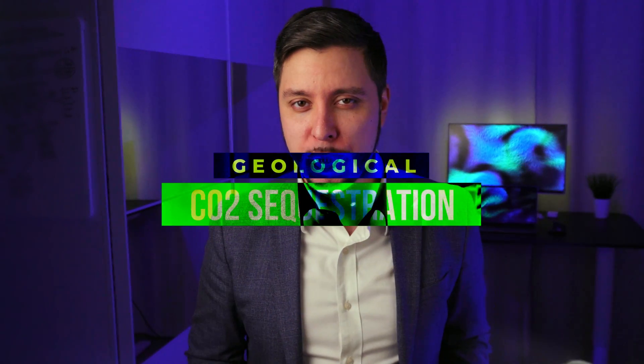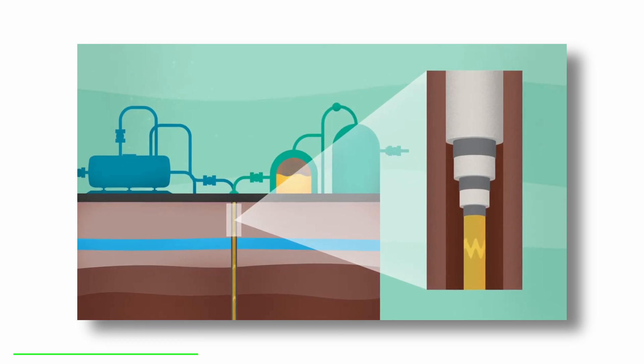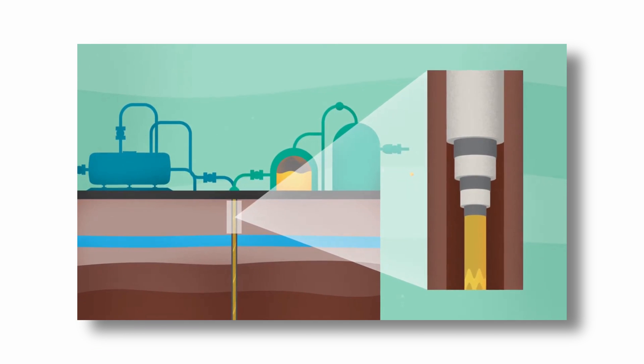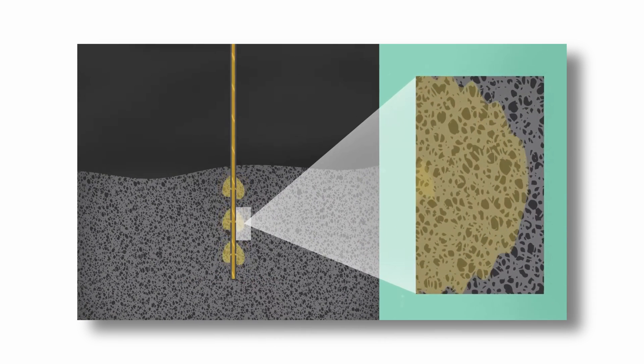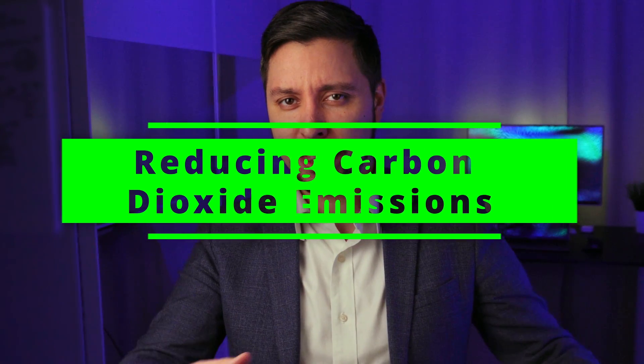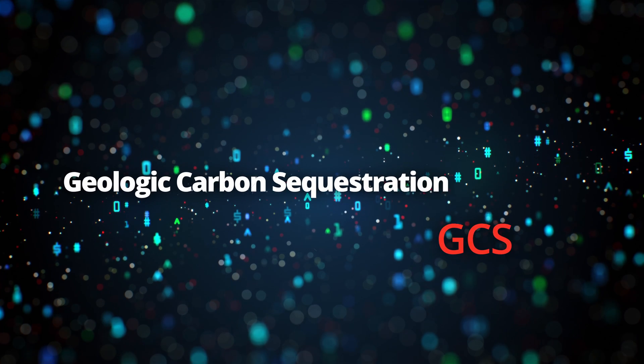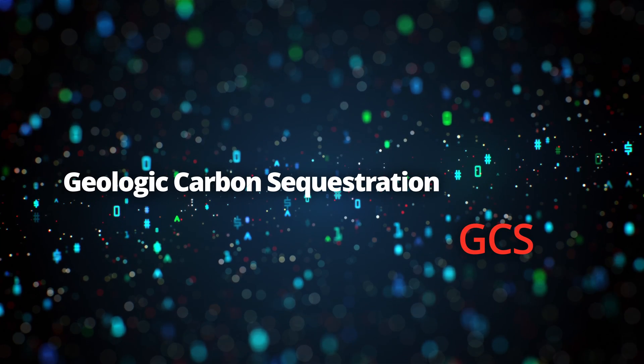Geological carbon sequestration is the storage of carbon dioxide in subsurface geological formations. Carbon dioxide is often obtained from industrial or energy-related sources, compressed to a fluid, and injected into porous rock for long-term storage. This is done to secure carbon dioxide in deep geological formations to prevent its release into the atmosphere and contributing to global warming as a greenhouse gas. I will refer to geological carbon sequestration as GCS to make my life easier.